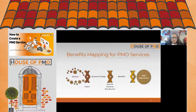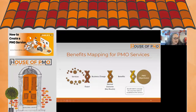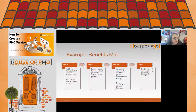Before we even start thinking about setting up any service, we need to understand the 'why' from the organization's perspective. Once we start adding numbers into this, we can then look at prioritizing which services should be set up first. Here's a more detailed example.